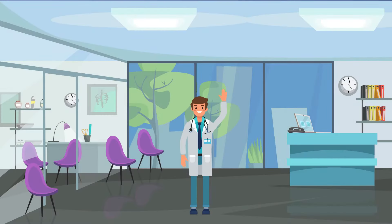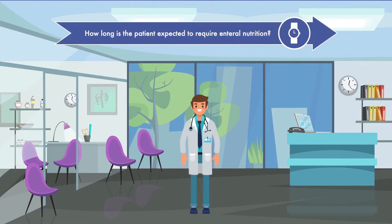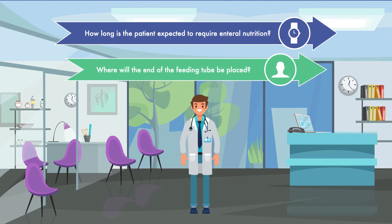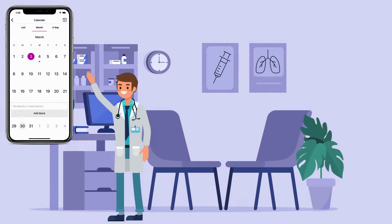Once it is determined that a patient will benefit from enteral nutrition, you need to figure out how it is going to be delivered. When doing this, there are two questions that must be addressed. One, how long is the patient expected to require enteral nutrition? And number two, where will the end of the feeding tube be placed? Time is important because there are feeding tubes that are best for short-term feeding, and there are others that are best for long-term feeding.